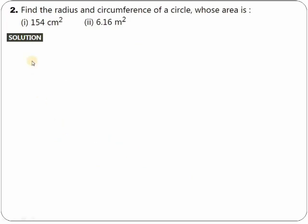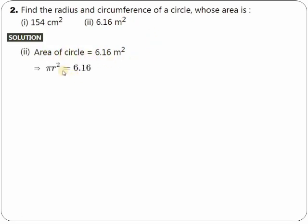Let's take number 2. From number 2, I will take sub-number 2. Given is the area of the circle: 6.16 meter square. You need to find the radius and circumference. Area of the circle can also be written as πr².